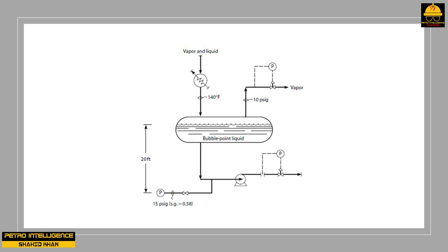The available NPSH to a pump is defined as: the physical pressure at the pump suction minus the vapor pressure of the liquid at the pump suction. To express the available NPSH in feet, measure the pump suction pressure and add the barometric pressure — 14.67 PSIA at sea level. Then look up the vapor pressure of the liquid pumped at the measured pump suction temperature, in PSIA.